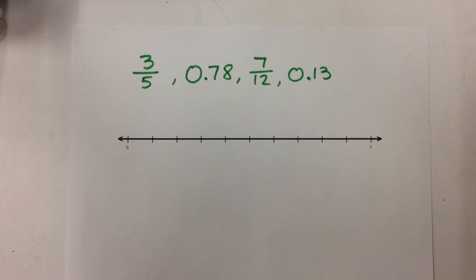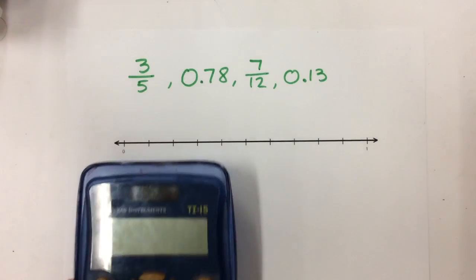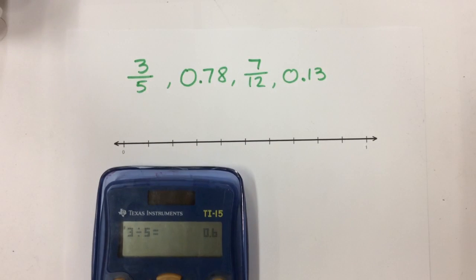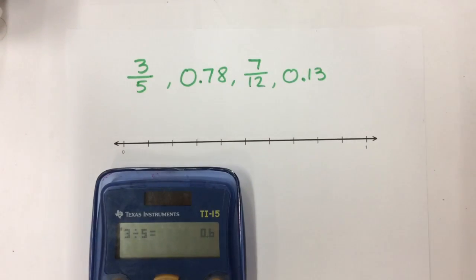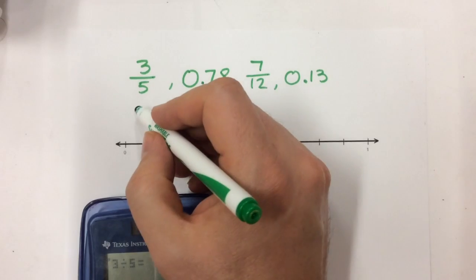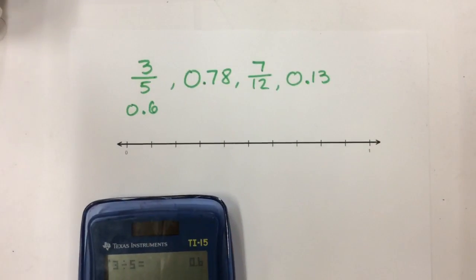There are a couple of steps you're going to want to take. The first step is to take all of your fractions and turn them into decimals. Luckily you know how to do this already. So take your calculator. I'm going to start with 3 fifths — we're going to do 3 divided by 5. Remember, it's the numerator divided by the denominator, and when we hit enter we get 0.6. So I'm going to turn 3 fifths into 0.6, or 6 tenths.